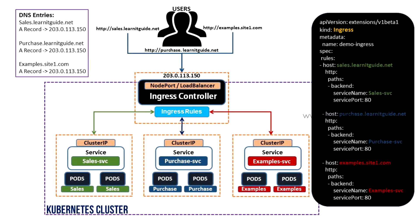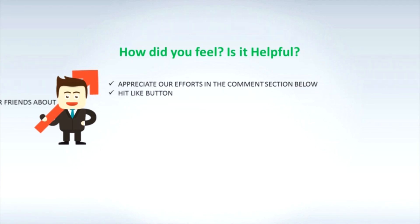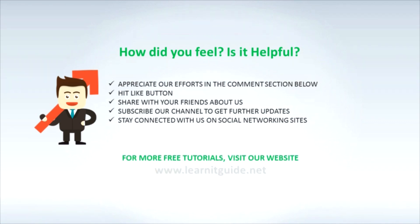When you have different services for each domain, define them accordingly in your ingress rules. I hope you now have a good understanding of Kubernetes Ingress and how to set up the Ingress Controller. In upcoming videos I will show other controllers and how to create SSL certificates for internally hosted applications so they can be accessed via HTTPS. Keep practicing and have fun! Hit like, share, subscribe, and visit our website at www.learnguide.net.